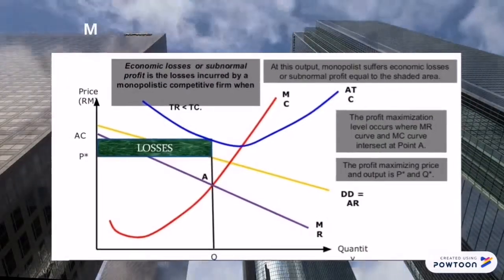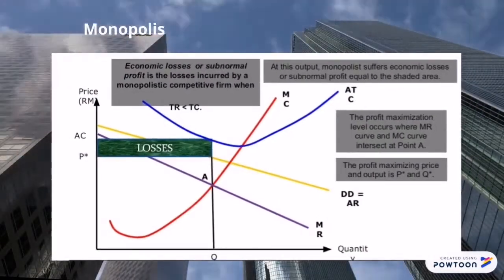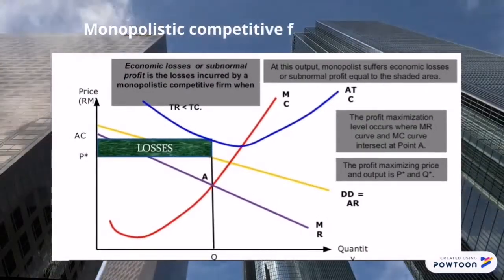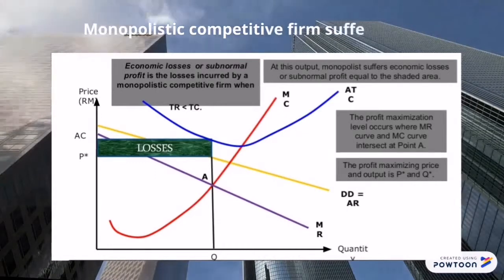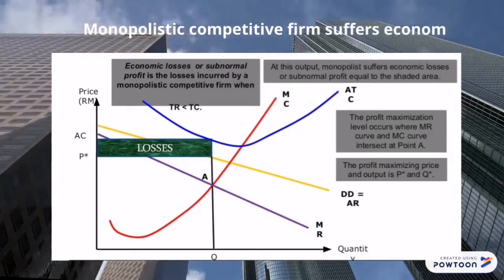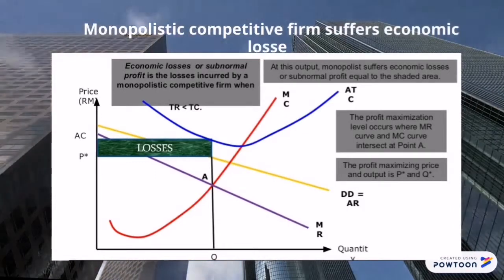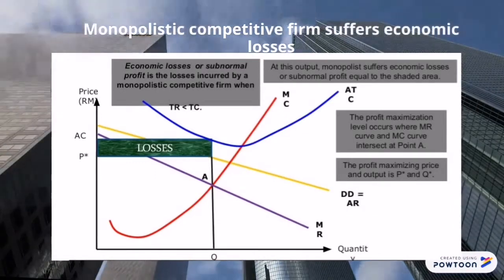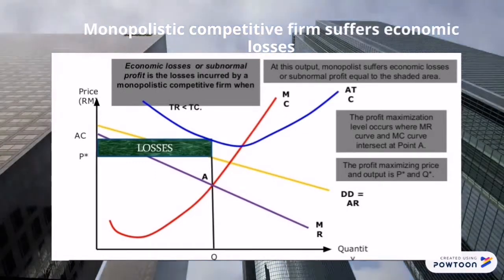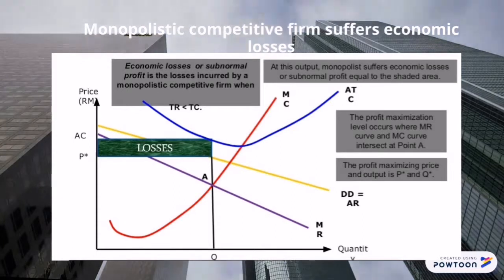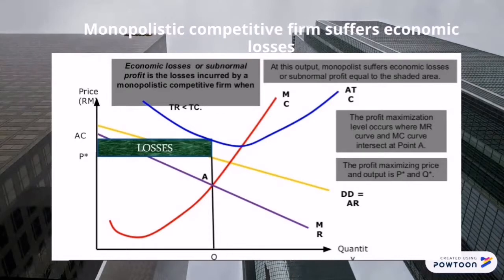A monopolistic competitive firm suffers economic losses or subnormal profit, which is the losses incurred when total revenue is less than total cost. The profit maximization level occurs when the MR curve and MC curve intersect.